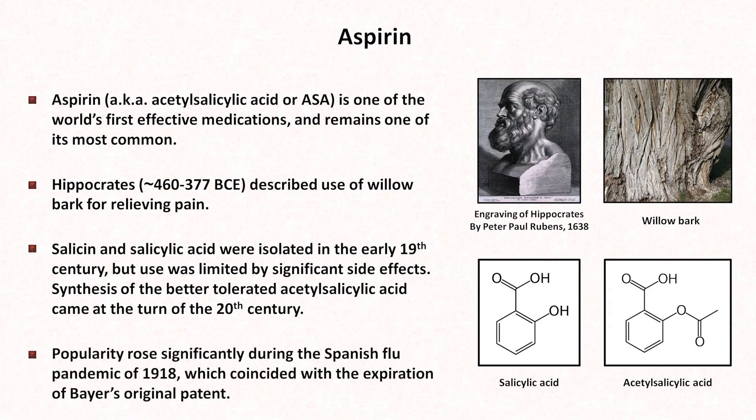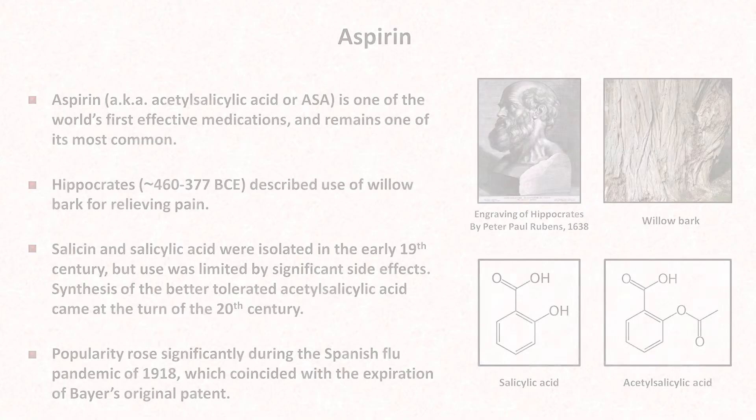Popularity rose significantly during the Spanish flu pandemic of 1918, which coincided with the expiration of Bayer's original patent. At the time, aspirin was essentially the only medication known to reliably reduce fever. The mechanism of aspirin wasn't actually discovered until the 1950s, before which it was believed that aspirin's pain-relieving effects occurred directly within the central nervous system. It was work on a group of biological compounds called eicosanoids that led to aspirin's discovery.